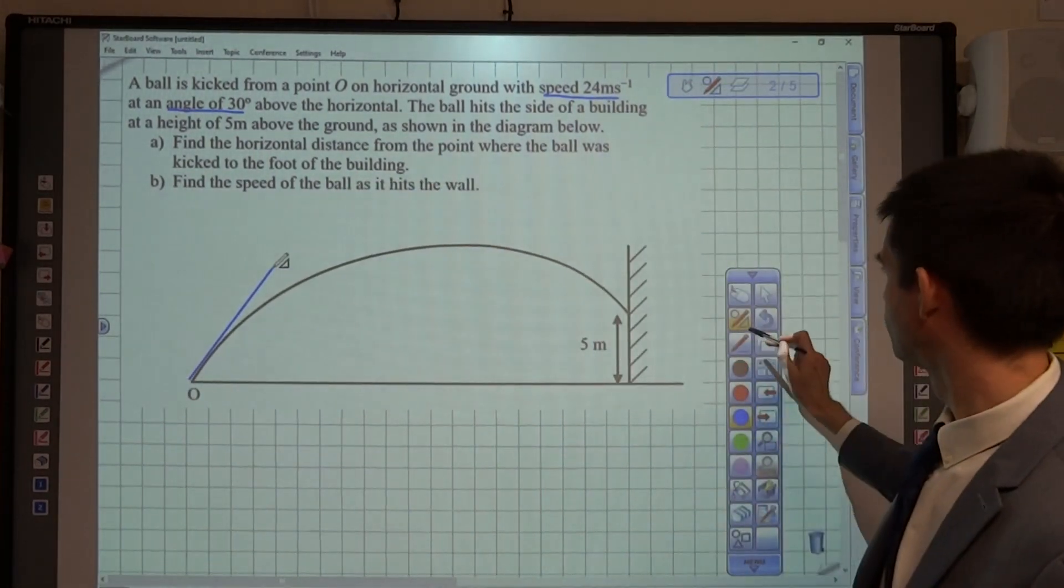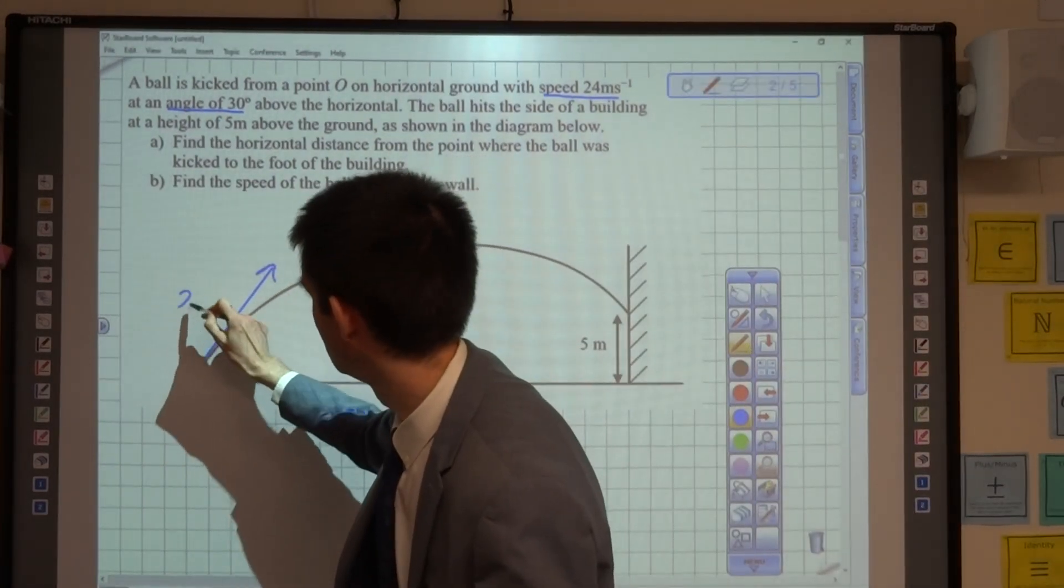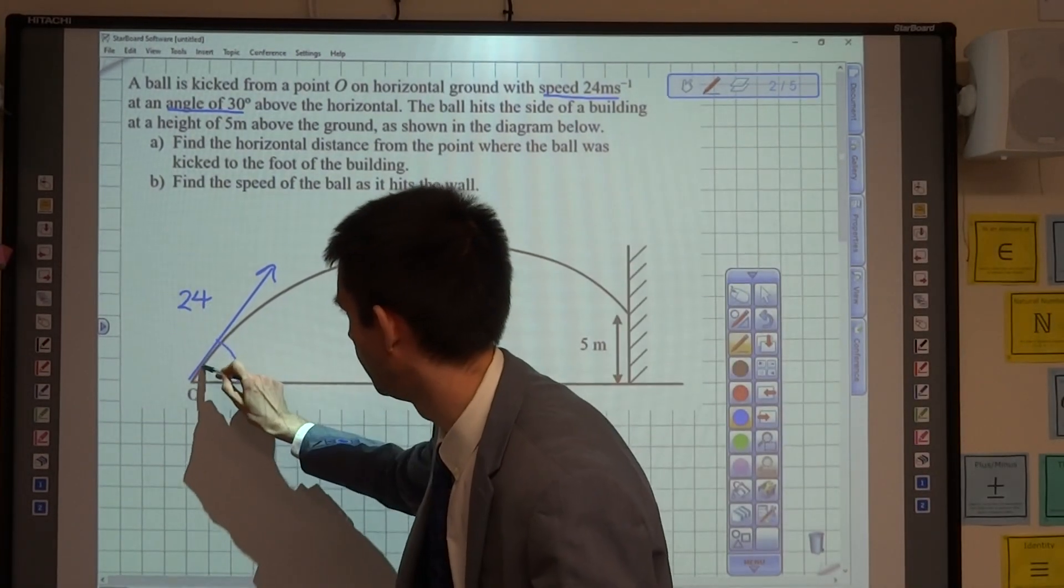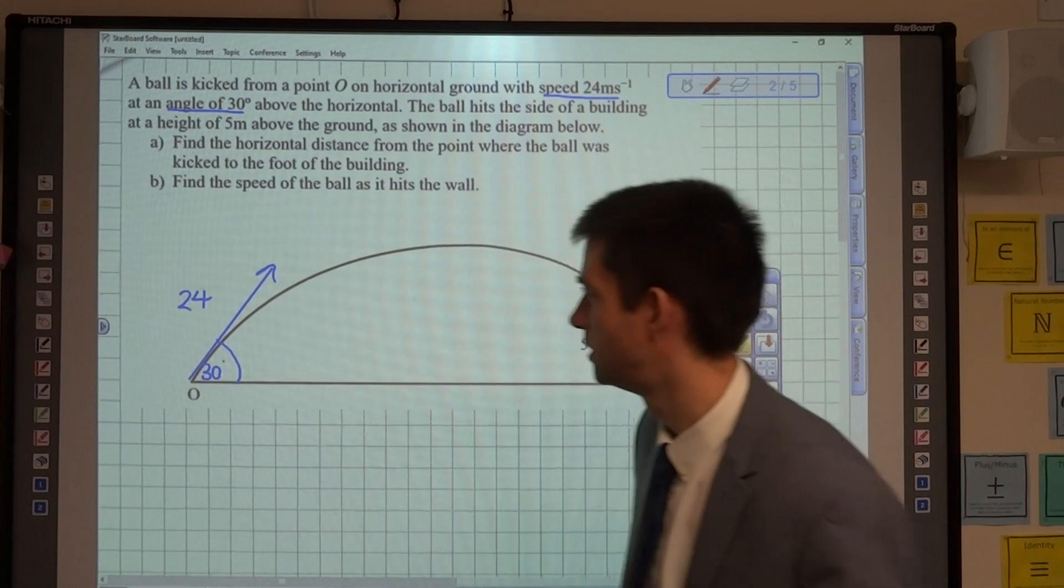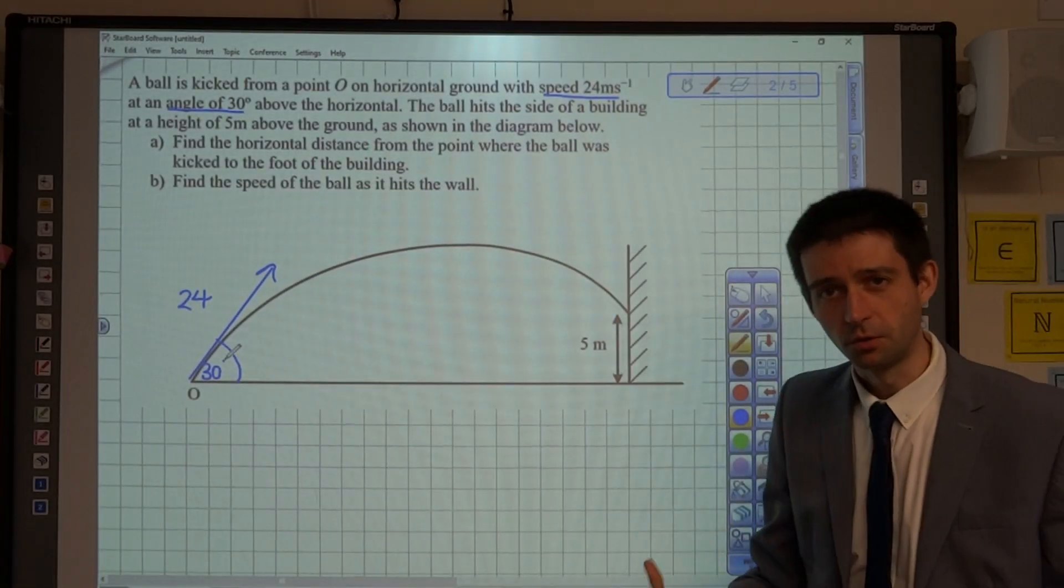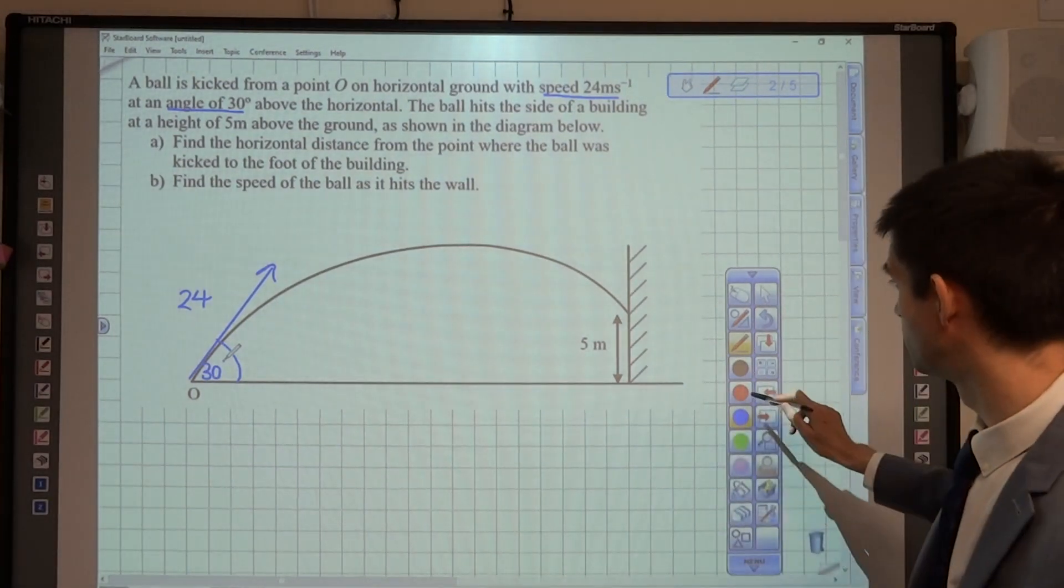I'm going to label that with 24 for the initial speed, and then this angle here I'm going to label as 30 degrees. This will enable me to consider the horizontal component of the initial velocity and the vertical component of the initial velocity.